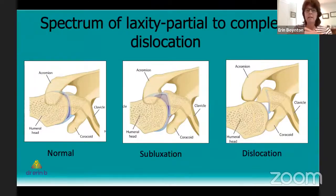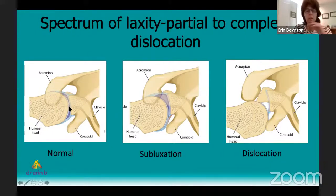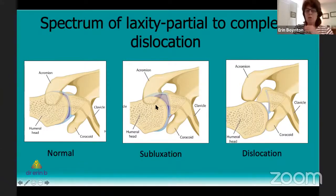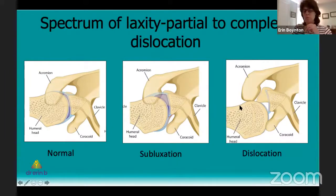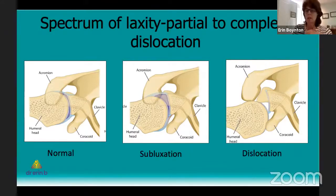We have a spectrum of laxity or instability. On the far left we have normal alignment — the humeral head perfectly lined up with the glenoid. A partial dislocation we refer to as a subluxation, where the shoulder is sloppy and the humeral head moves in and out of the glenoid saucer but doesn't completely come out of joint. At the far end of the spectrum is a dislocation, and as mentioned, the most common direction for the humeral head to dislocate is out the front.